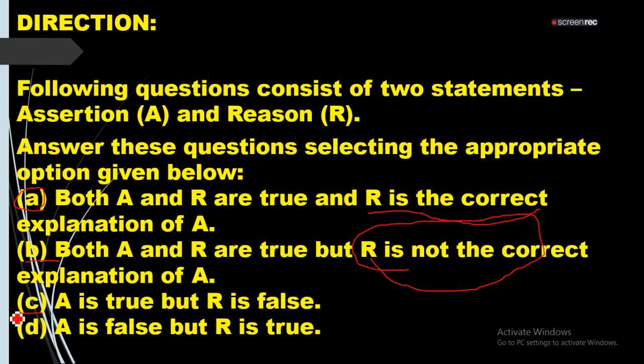When we choose C, when we know that A is true but R is false. It means assertion is true but R is totally false. When we choose D, when we know that A is false but R is true.